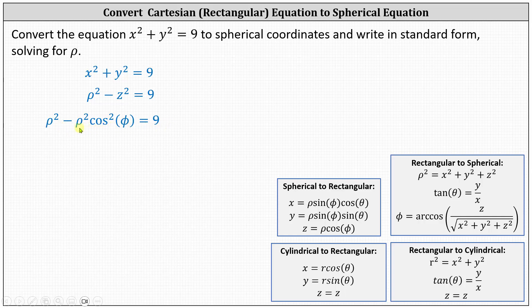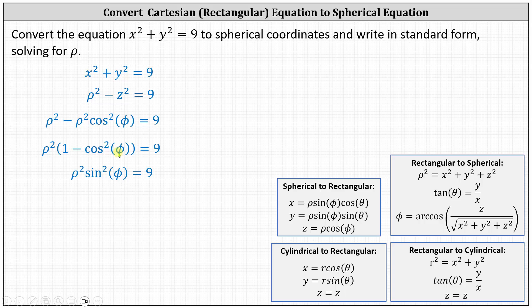Now we'll factor out the greatest common factor on the left of rho squared, which gives us rho squared times the quantity one minus cosine squared phi. Using our trig identities, one minus cosine squared phi equals sine squared phi.